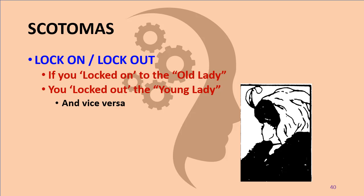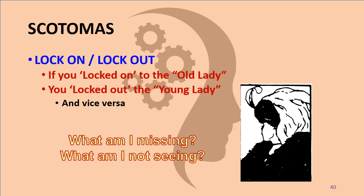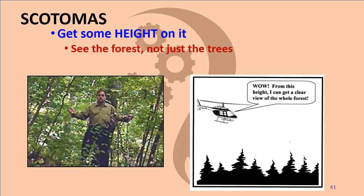We all have scotomas. If you locked on to the old lady, you locked out the young lady — and vice versa. When you run into a situation where you're not seeing something or not understanding it, you have to ask yourself: What am I missing? What is it I'm not seeing? Get used to asking those questions — your reticular activating system will in turn find the answers. You've heard the saying 'I can't see the forest for the trees' — you're caught in the details, so tied up in the minutia that you can't even see it's a forest.